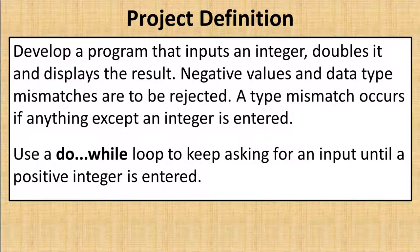Develop a program that inputs an integer, doubles it, and displays the result. Negative values and data type mismatches are to be rejected. A type mismatch occurs if anything except an integer is entered. Use a do-while loop to keep asking for an input until a positive integer is entered.